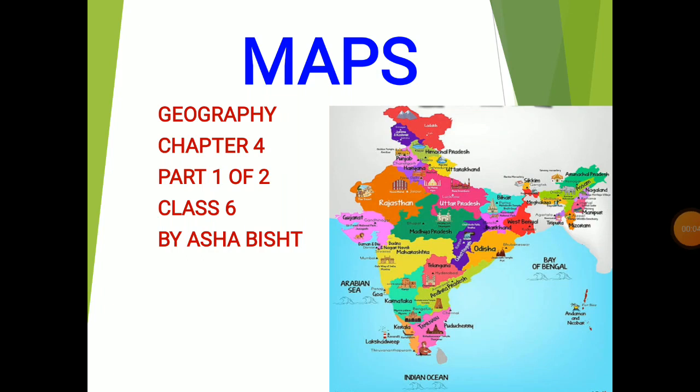Hello everyone, I am Asha Bist. Hope you all are safe and happy at your places. Dear children, today I welcome you all in Class 6, 4th chapter of history: Maps. In this chapter, we will discuss about maps, its types, as well as the components of a map. So let's begin with the first part of this chapter.